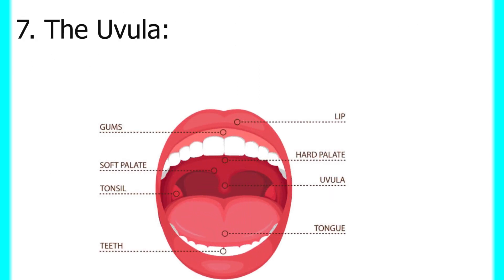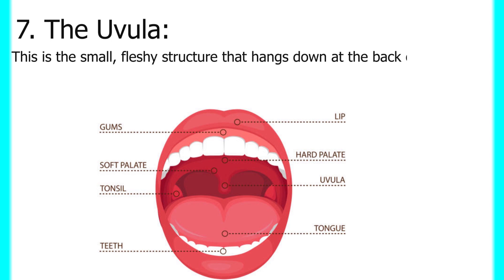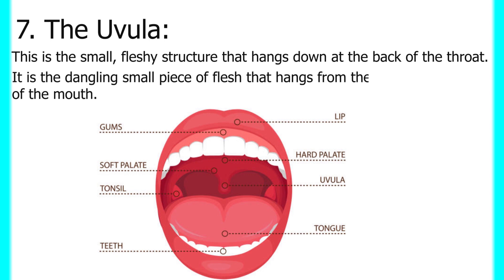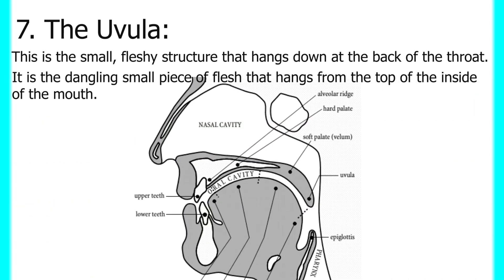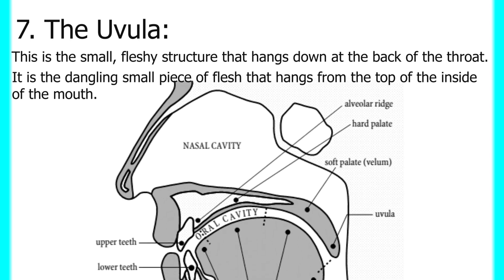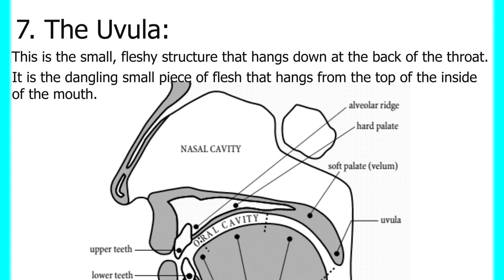Next we have the uvula. The uvula is the small fleshy structure that hangs down at the back of the throat — the dangling small piece of flesh that hangs from the top of the inside of the mouth. When producing oral sounds, it helps close the air passage by pressing tightly against the pharynx, obstructing air from entering the nasal cavity. When producing nasal sounds, it opens, causing air to pass through the nasal cavity.